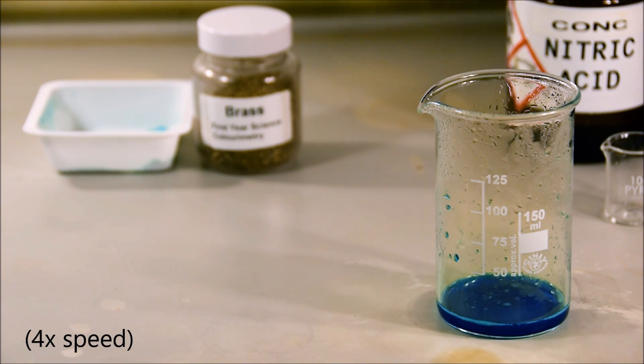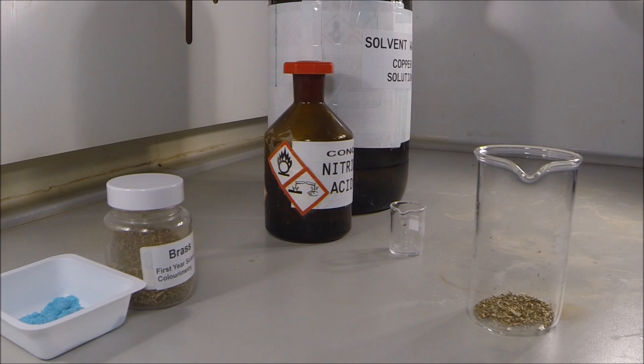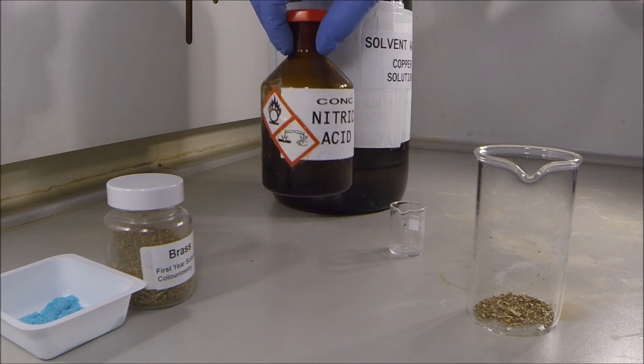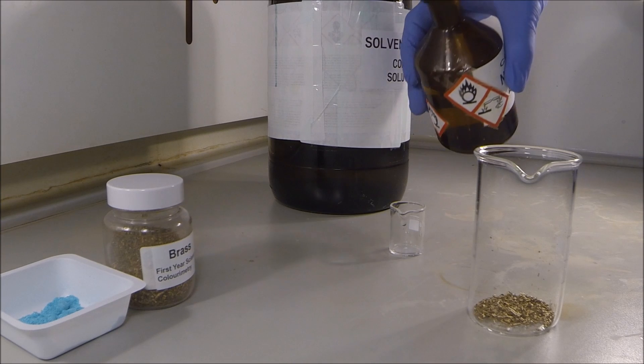So let's have a quick look at how we've set this up. The first thing we did was we massed out exactly, approximately 2 grams of brass shavings. That is, we know precisely how much we've massed out. We then put that into the fume hood and we measure out approximately 10 milliliters of nitric acid. It's very important we know exactly how much brass, not so important we know how much nitric acid, since the amount of nitric acid, as long as there's an excess, isn't going to affect the amount of copper that we have in solution.